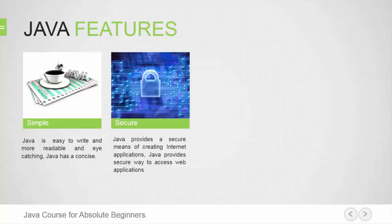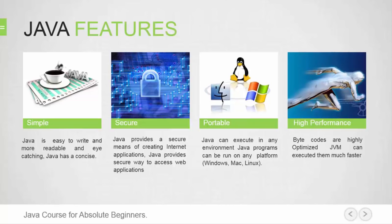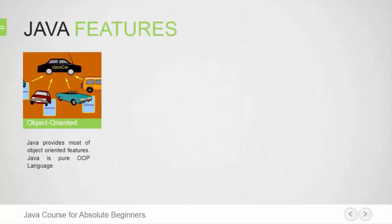Second: Secure. Java is designed to be secure in a networked environment. The Java runtime environment uses a bytecode verification process to ensure that code loaded over the network does not violate Java security constraints. Third: Portable. The bytecode generated by Java can be used on any machine. Fourth: High performance. The use of bytecode makes performance high. It was designed to support just-in-time compilers, which dynamically compile bytecodes to machine code. Fifth: Object-oriented. Java is purely object-oriented. All programs and data reside inside objects and classes, which have a unique identity, encapsulate attributes and operations, and are instances of classes related by inheritance and polymorphism.